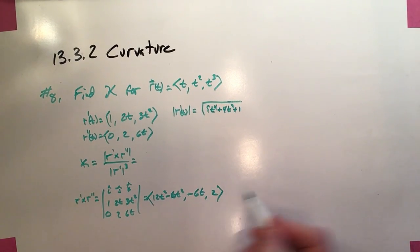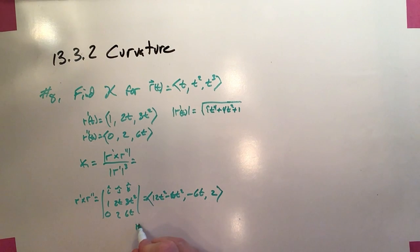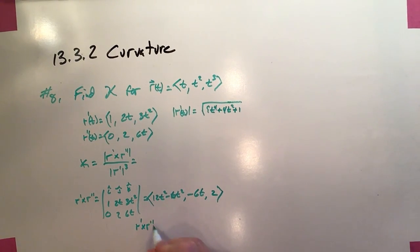Okay, so there it is. And we still have to evaluate its magnitude for the numerator up there. So let's look at the magnitude of r prime crossed with r double prime.